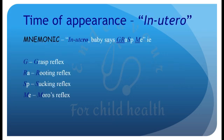The reflexes which appear in utero can be remembered by the mnemonic 'In utero, baby says Grasp Me,' where G stands for Grasp reflex, R stands for Rooting reflex, S for Sucking reflex, and M for Moro reflex.